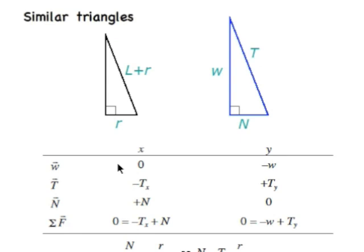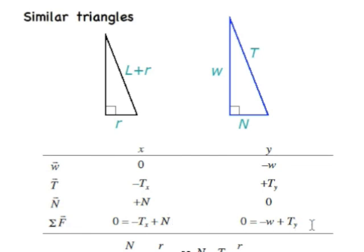Breaking down the forces into x and y components: the weight has no x component — it's all negative W in the y direction. Tension has both x and y components: negative in the x direction and positive upward in the y direction. The normal force has only an x component, no y component. From Newton's first law, the sum of forces in the x direction equals zero, and the sum of forces in the y direction equals zero.